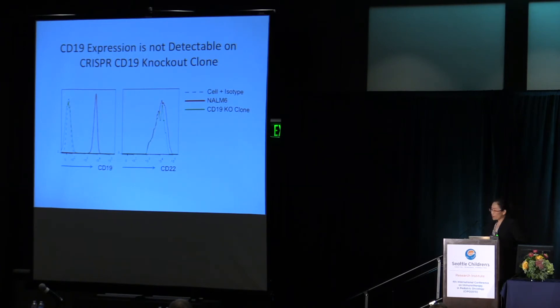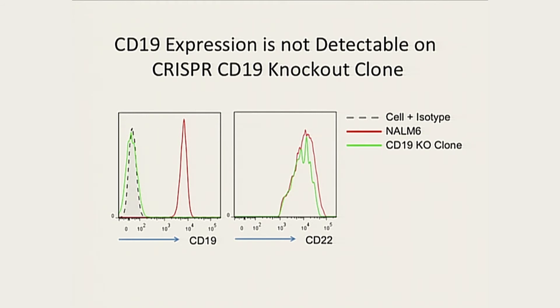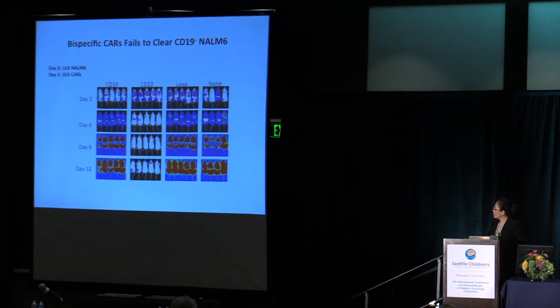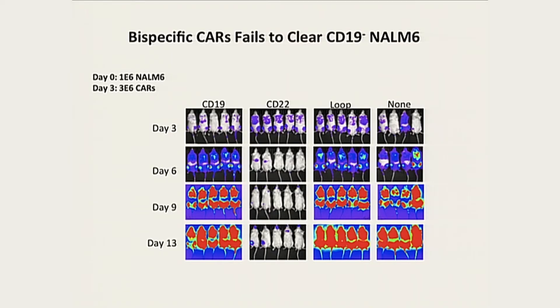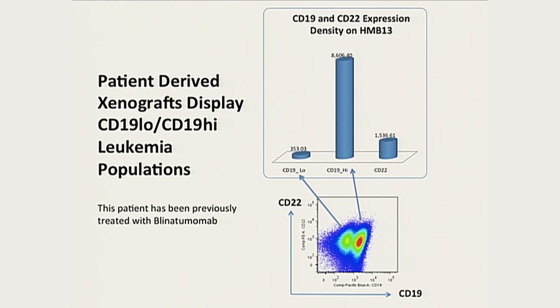To further verify the loop CAR's function against a single antigen, we used CRISPR technology to knock out CD19 on NALM6. In this CD19 knockout clone, CD19 expression is undetectable, but CD22 expression remained normal. We then tested this CD19-knockout line in vivo. Unfortunately, the loop CAR could not clear the leukemia — which was really surprising.